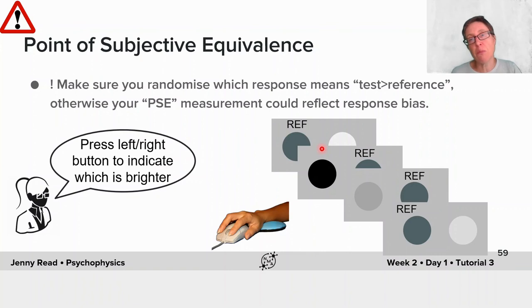In this example, I've swapped over the reference stimulus, which is being held constant. Sometimes it's on the left, sometimes it's on the right. The subject is asking themselves which stimulus appears brighter, the one on the left or the one on the right. And I can decode that into test greater than reference.